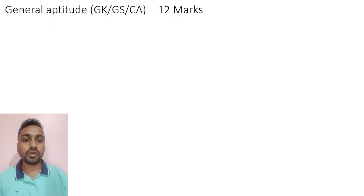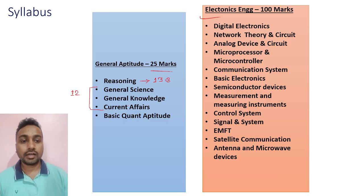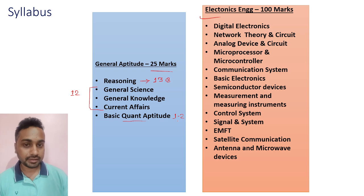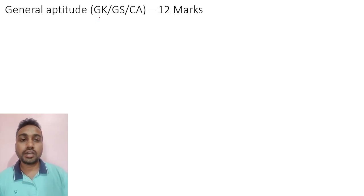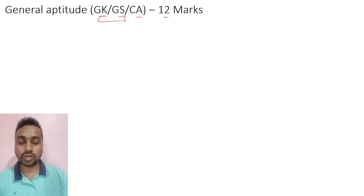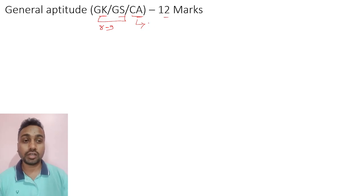General aptitude includes GK, GS, and Current Affairs. Till now they haven't asked basic quantitative aptitude questions, but maybe one to two questions may come this time — it's not guaranteed. For GK, GS, and Current Affairs, you are going to get 12 questions, with 8 to 9 questions from GK and GS and around 3 to 4 from Current Affairs.